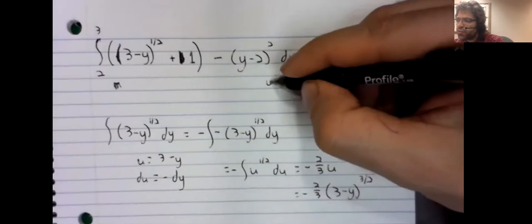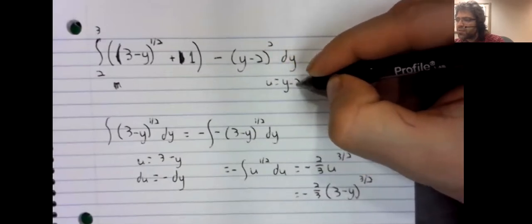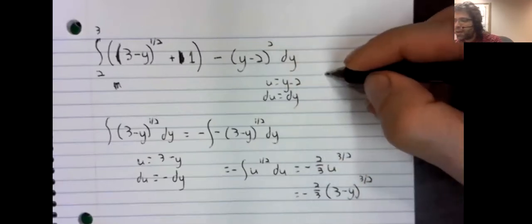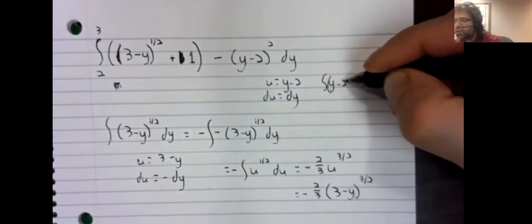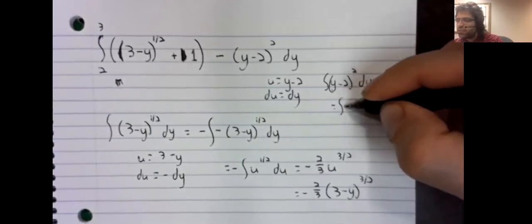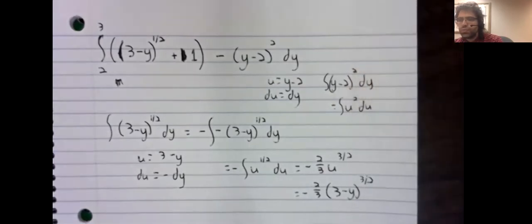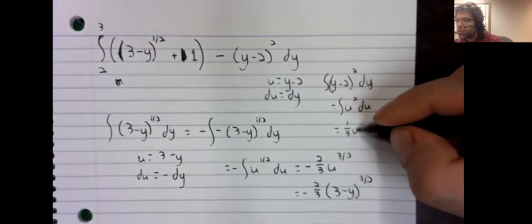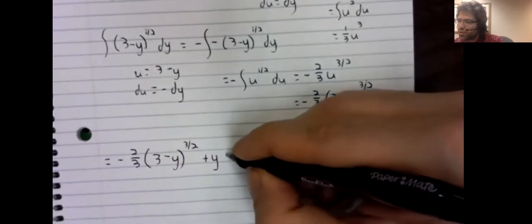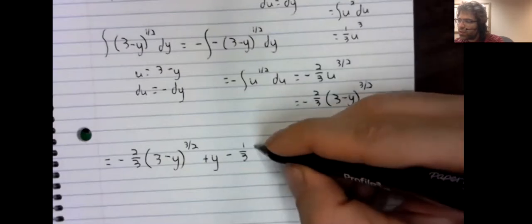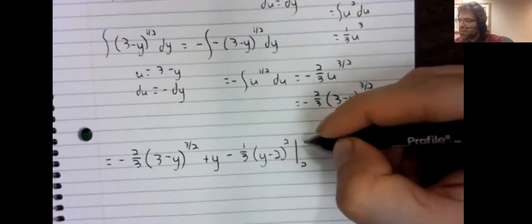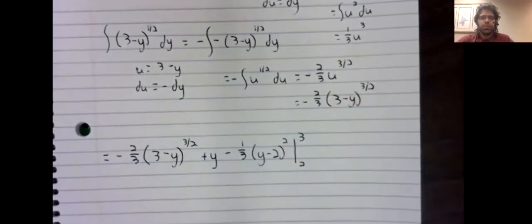Plus, the anti-derivative of one is y. Now here, if we let u be y minus two, du is just dy. So the integral of y minus two squared dy is the integral of u squared du. It's one third u cubed. And u is y minus two. So minus one third y minus two cubed. And we're evaluating from two to three.